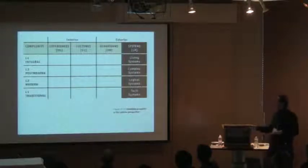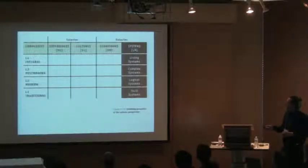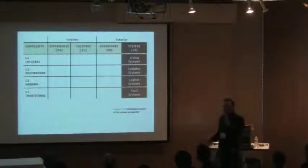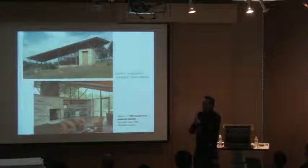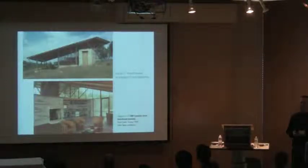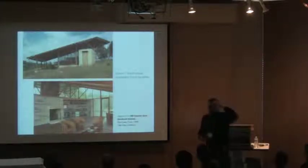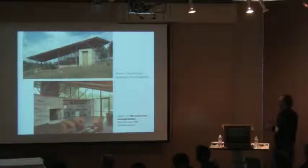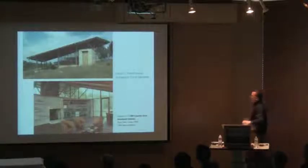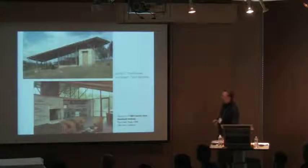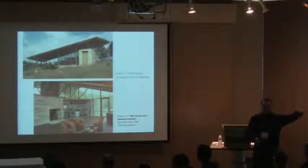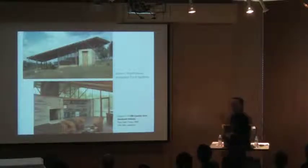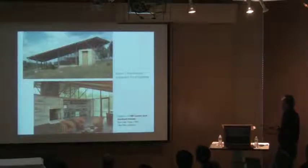At the traditional level, we have tacit systems. At the modern level, what I call logical systems. At the complex level, that's a postmodern worldview on systems. And at the integral level, what I think of as living systems. Here's an example of a building — even though it's contemporary — that represents tacit systems. Tacit systems are things that are embedded. To the traditional worldview, there is no such thing as an ecosystem — ecosystems don't exist for the traditional worldview. They don't show up on the horizon of awareness. They're embedded in the practices, embedded in what works, changed little by little by trial and error, typically over hundreds or thousands of years.